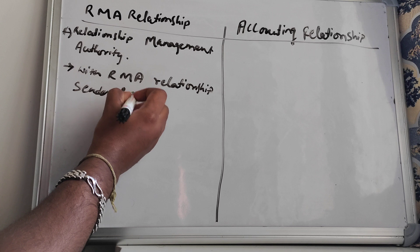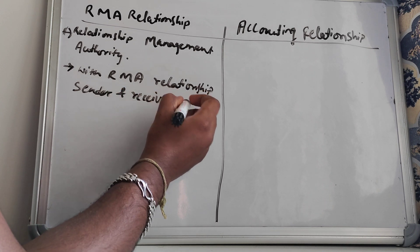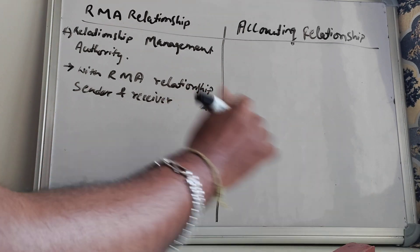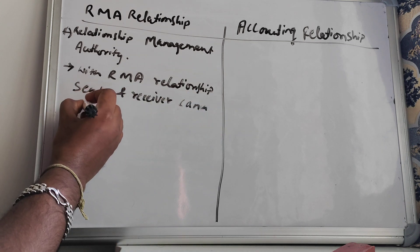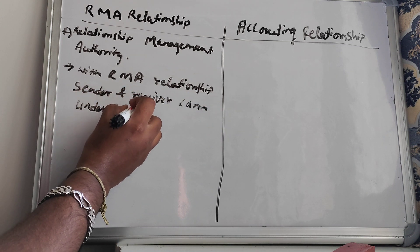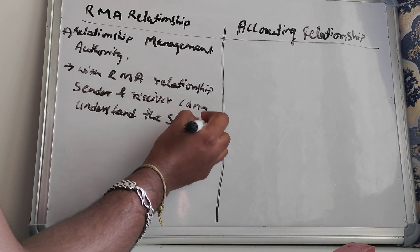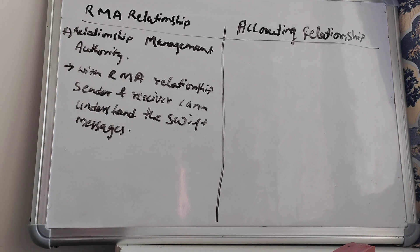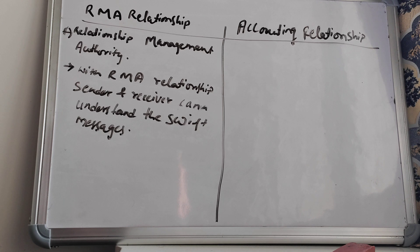With this RMA relationship, the sender and receiver can understand the SWIFT messages. So only if you have this RMA relationship will you be able to understand the SWIFT messages sent from the sender, and vice versa. This is all about the RMA relationship between the two banks.